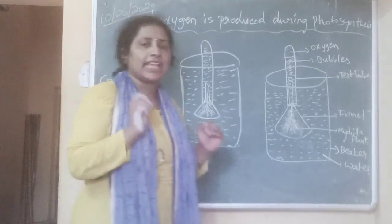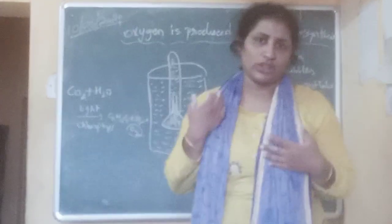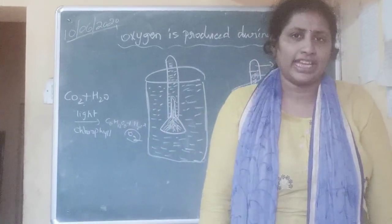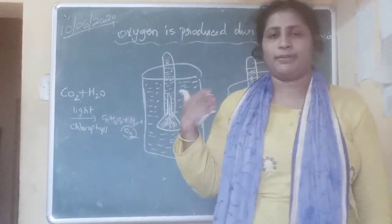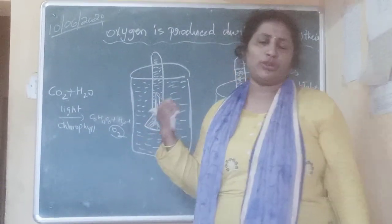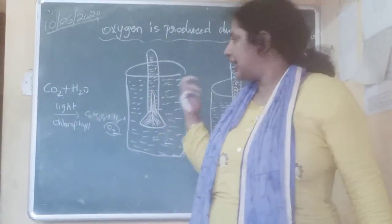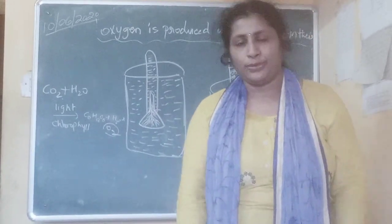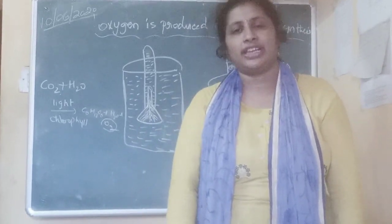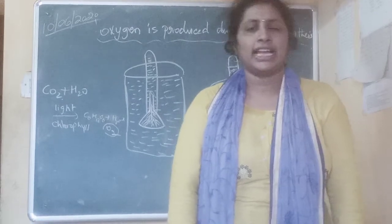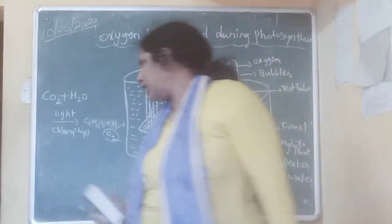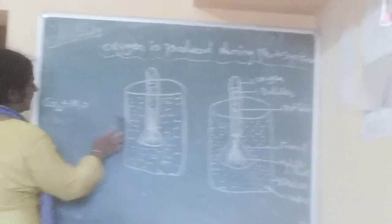Which gas is evolved during photosynthesis — whether it is oxygen or any other gas? Scientists have done several experiments. The previous experiment which Ingenhousz did was the same experiment. He used a hydrilla plant to prove that oxygen is liberated during photosynthesis. For the liberation of oxygen, energy is needed, and that energy comes from sunlight. Now let us see the experiment.